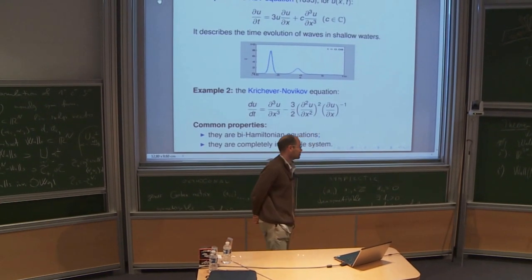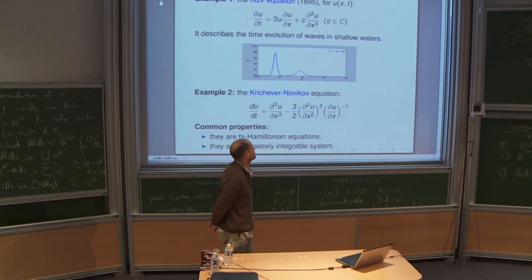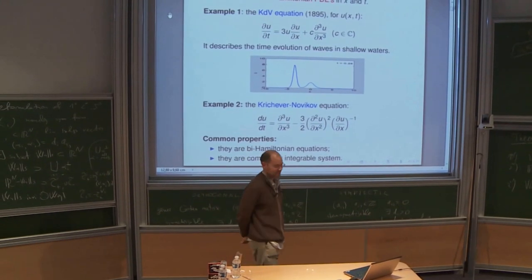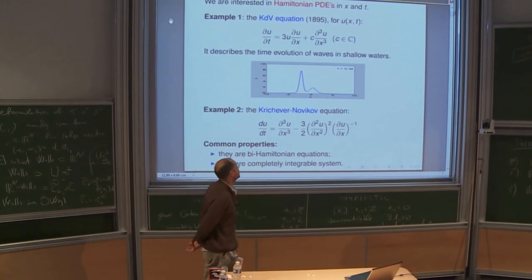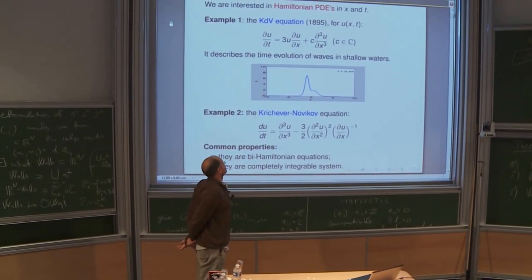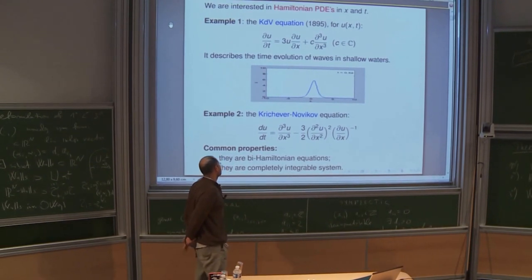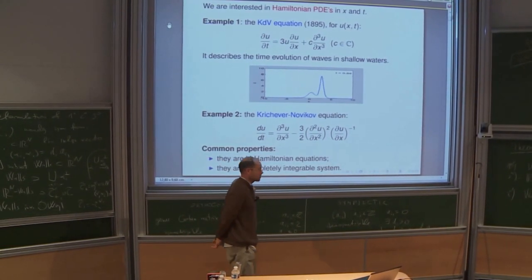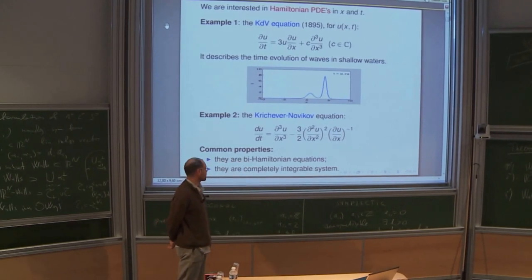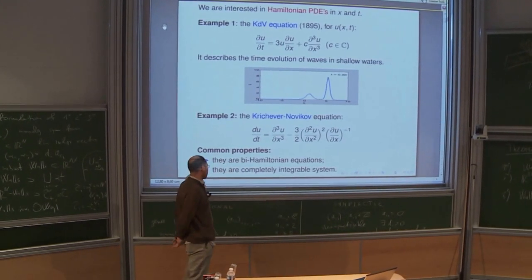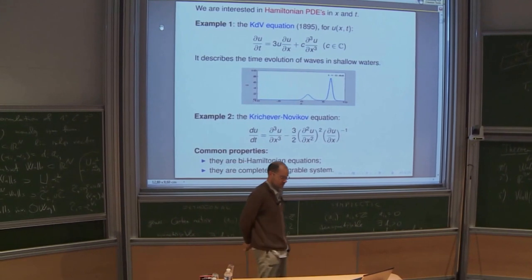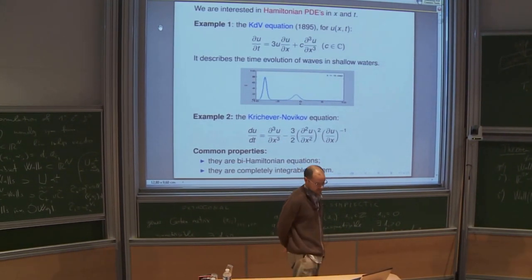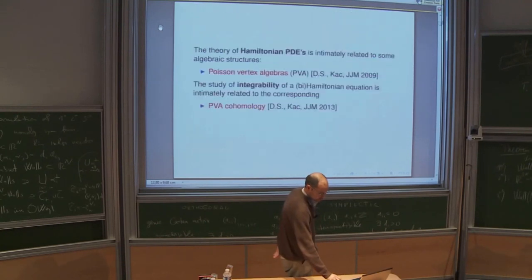The talk is on Hamiltonian partial differential equations. The most famous example is the KdV equation, but there are many others, for example the Drinfeld-Sokolov-Novikov equation. All these examples have the property of being bi-Hamiltonian, which I will explain, and of being completely integrable. Before talking about Hamiltonian equations, I want to discuss some algebraic structures associated to PDEs.